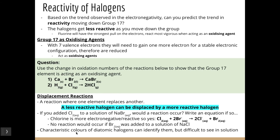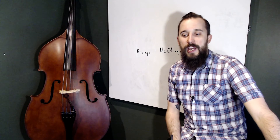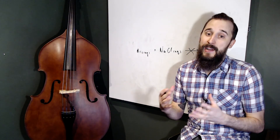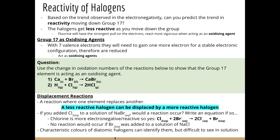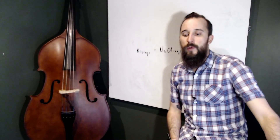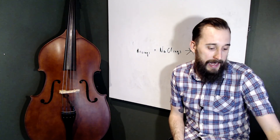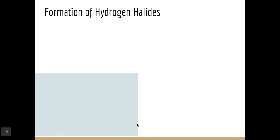We can use this to identify unknown substances because the halogens have characteristic colors. By observing color changes in displacement reactions, we can perform qualitative analysis to identify an unknown halide. Because the colors can be difficult to see in solution, we can dissolve the halogens in an organic layer — such as cyclohexane — which is immiscible with water, creating two separate layers where the colors are much more clearly visible.